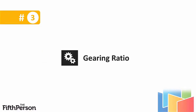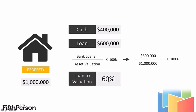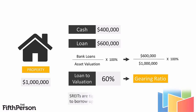The third important metric is the gearing ratio. This is where you assess whether the REIT is taking on excessive loans, because many REITs got into trouble by taking on too much debt. The gearing ratio is calculated the same way as loan-to-valuation for personal property. If you buy a property for $1 million, put up $400,000 cash and borrow $600,000 from the bank, your gearing ratio is 60%. For REITs, it's total bank loans over asset valuation — same concept, just different terminology.